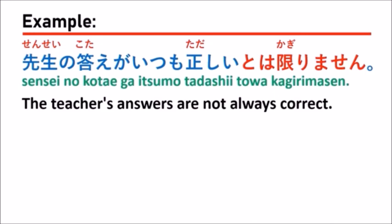In this sentence, you should focus on what comes before とは限りません. Here they use an i-adjective — 正しい is an i-adjective. You don't need to change anything after the i-adjective; you just use it as-is, then follow with とは限りません.